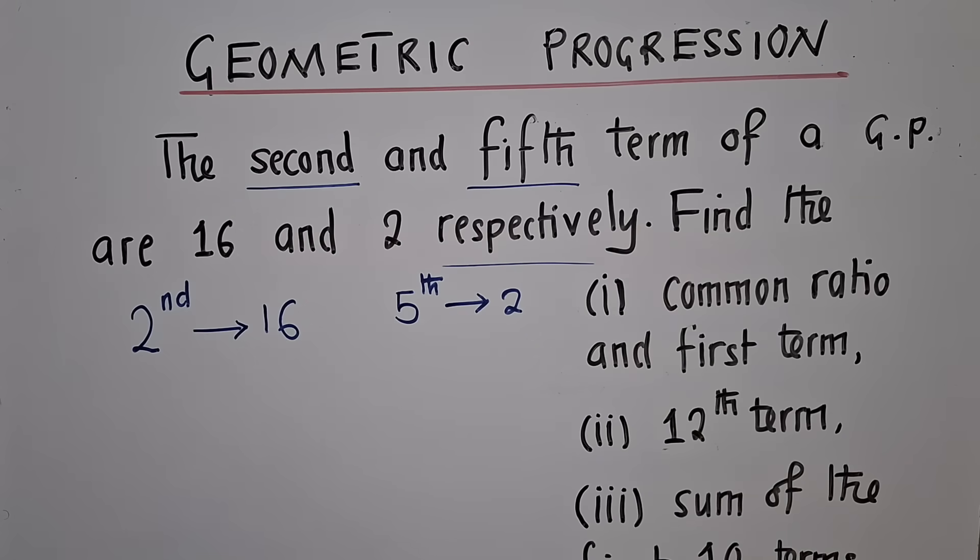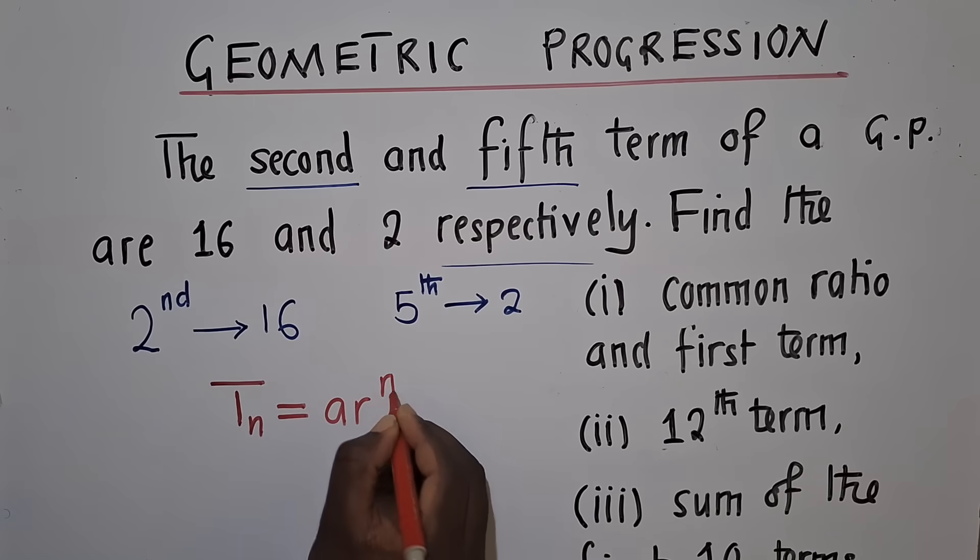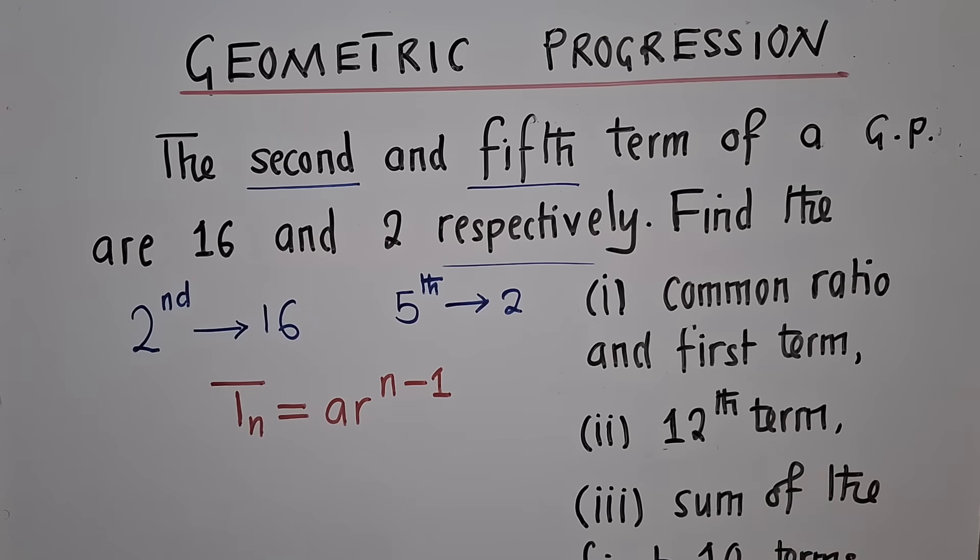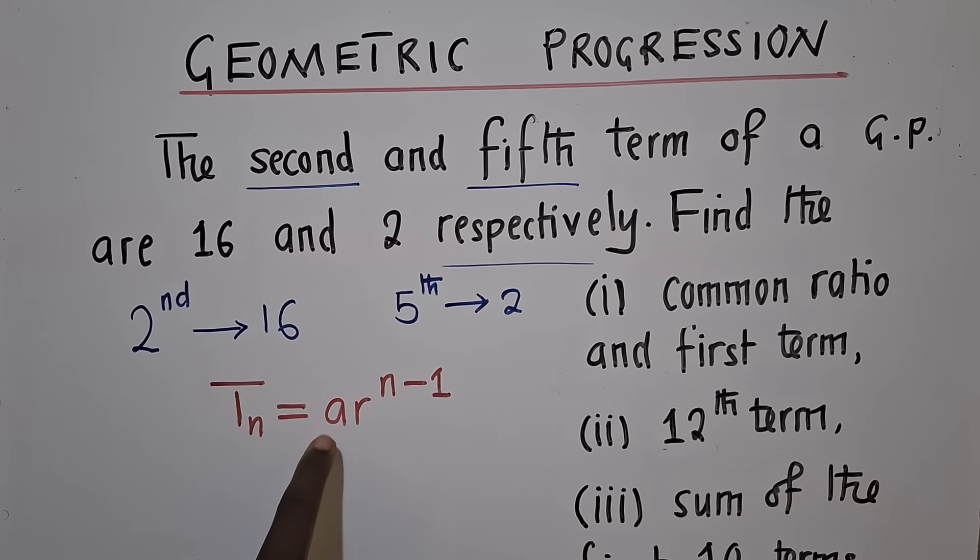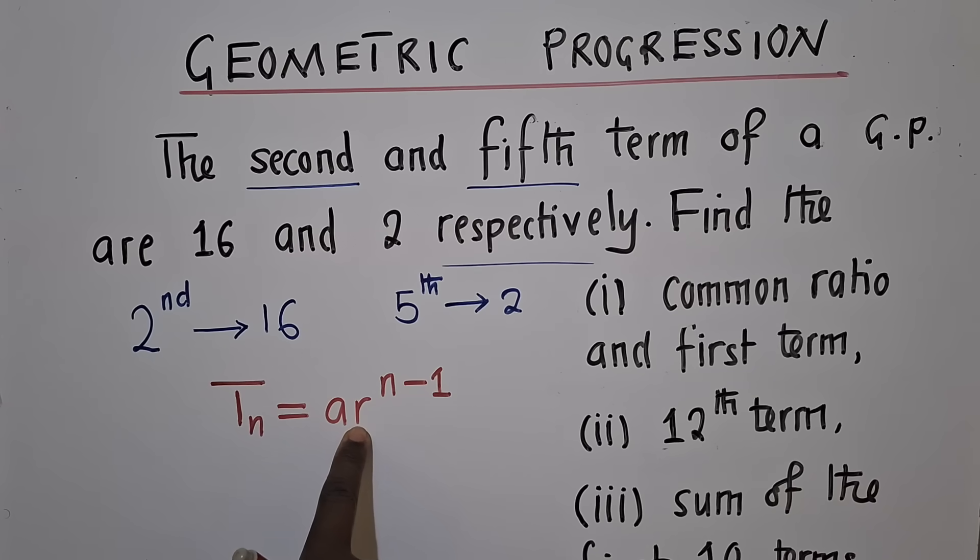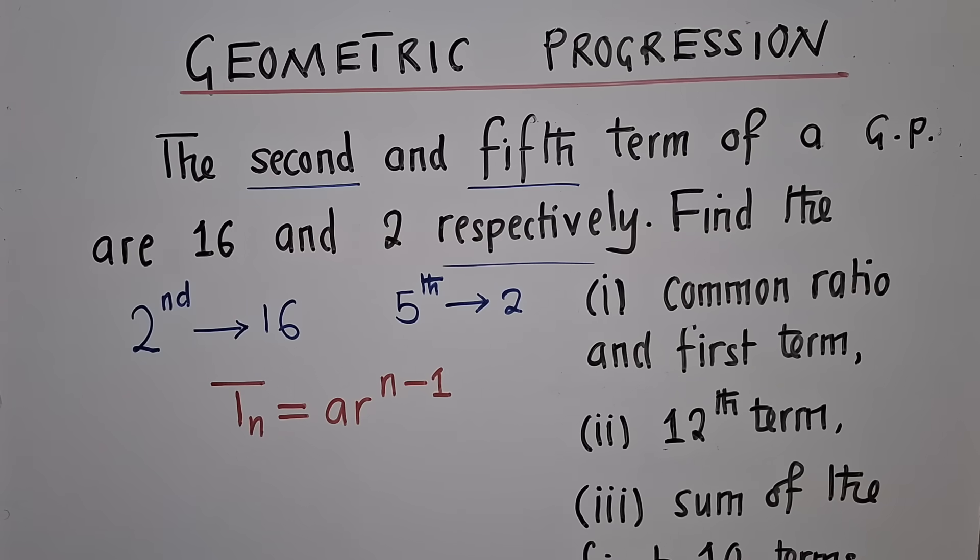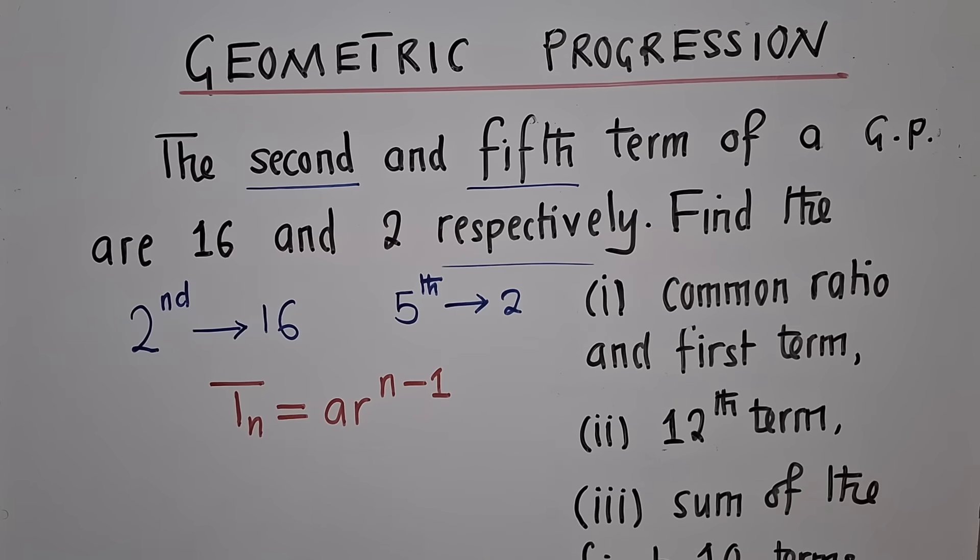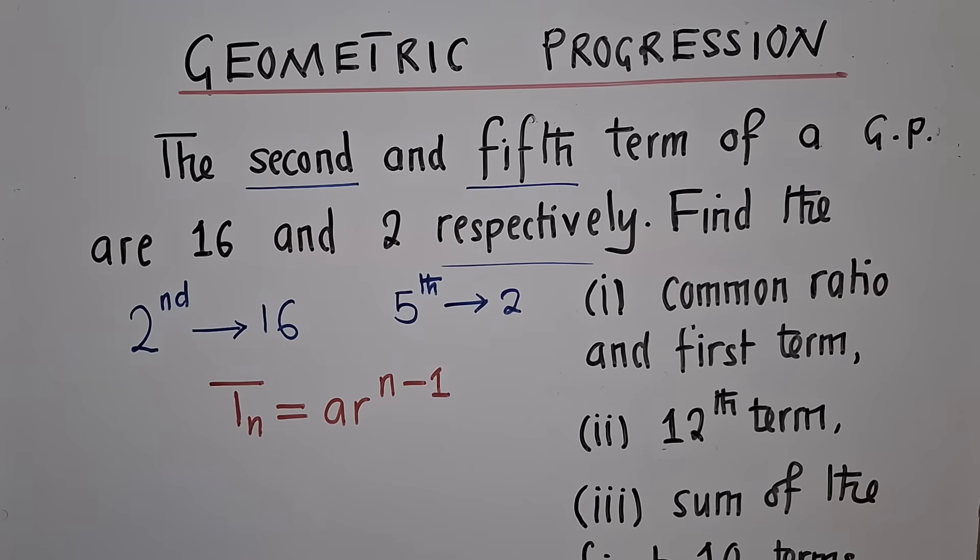to find the first term, the common ratio, we need to depend on the term formula. And this is how it looks. So now, when we check nicely, what they want us to find? They want us to find the first term, the common ratio. So A is the first term. R is the common ratio. Now when we look at these two, this and this, these two will help us form two equations.